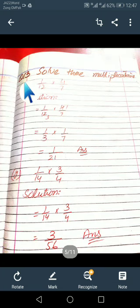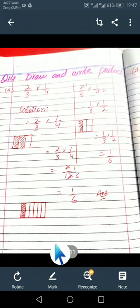Question number 13: Solve these multiplications. They are also very simple. If they will cut with any table, first we will cut them and then we've got the answer. 1 by 12 into 4 by 7: 4 1s are 4, 4 3s are 12. 1 by 3 into 1 by 7 means 1 by 21. 1 by 14 into 3 by 4, so solution 1 by 14 into 3 by 4: 3 1s are 3, 14 4s are 56. Complete the rest of the parts of question number 13.